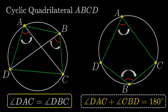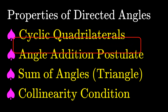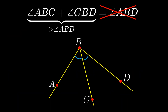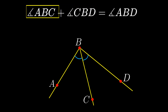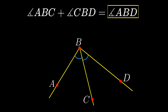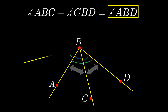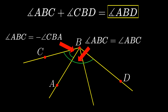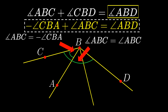The next property is the angle addition postulate. When adding two angles, a stronger statement is that the sum of the directed angle ABC and the directed angle CBD equals the directed angle ABD. Take a moment to verify this yourself. It is obvious when C is inside angle ABD, but when C is outside, one of the angles will be negative, which is exactly what we expect to make the general equation hold.